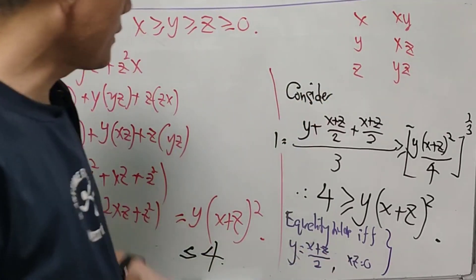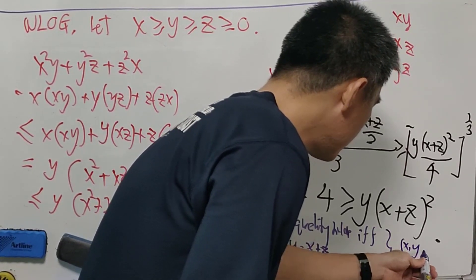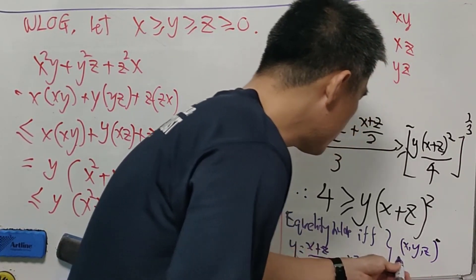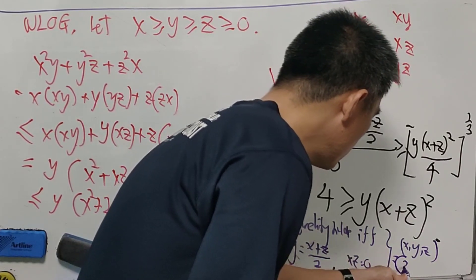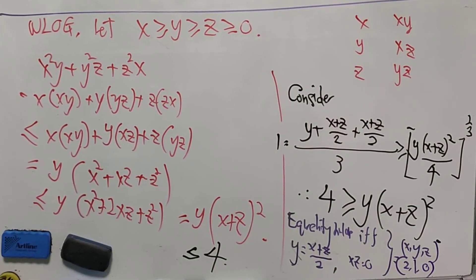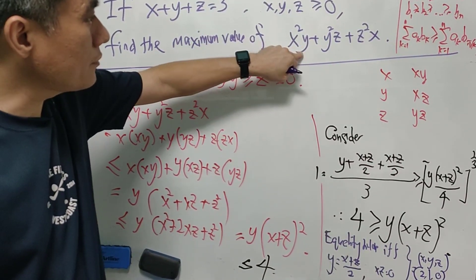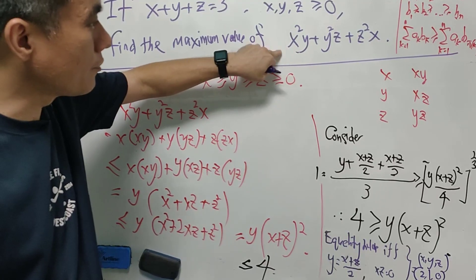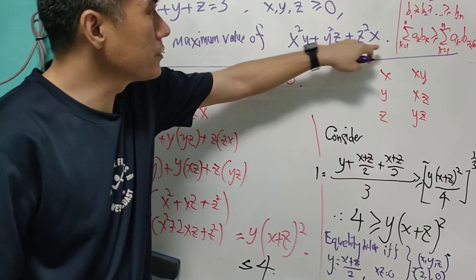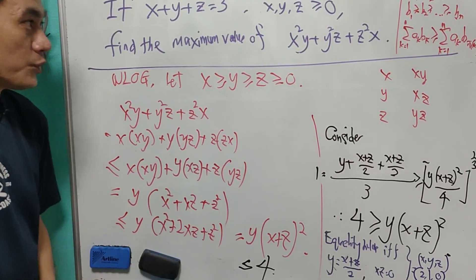Okay. So all these combined, then we know that the equality holds if and only if X, Y, and Z is equal to 2, 1, and 0. We substitute 2 here. 2 squared times 1, that is 4 times 1, 4. And Z equals to 0. This will be equal to 0. And therefore, the maximum indeed is equal to 4.